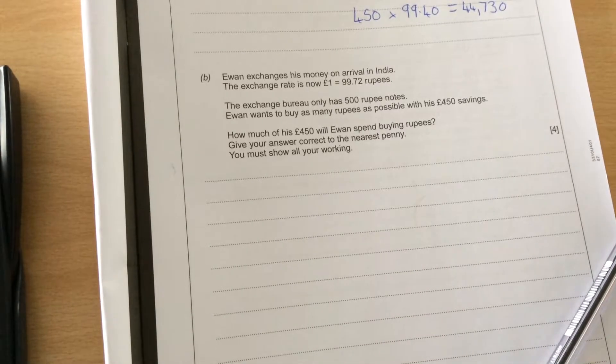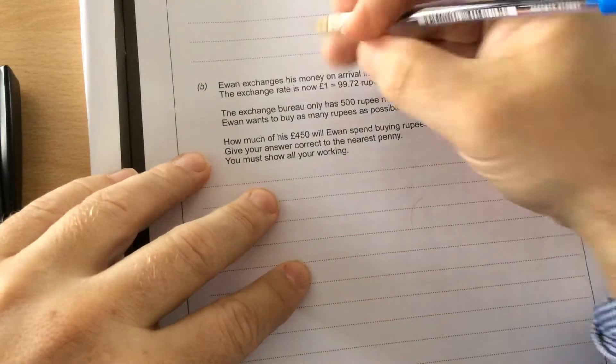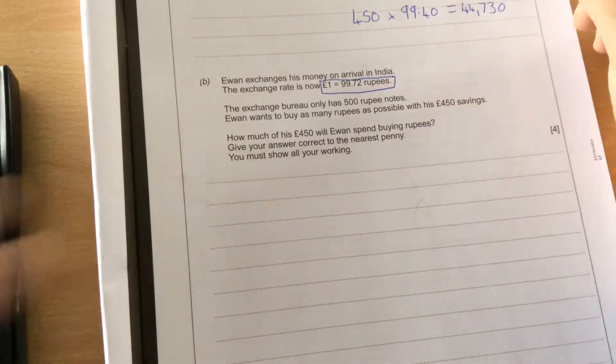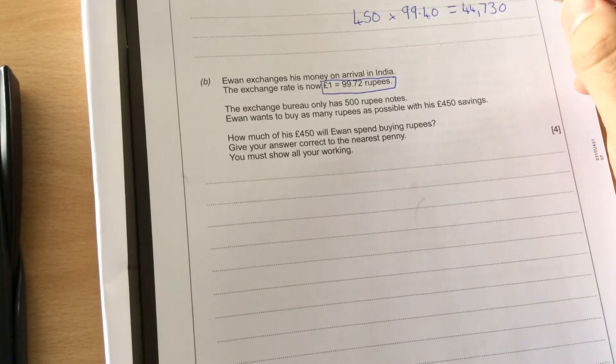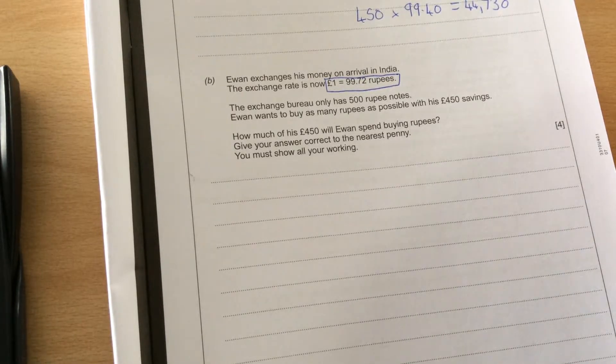Ewan exchanges his money on arrival in India. The exchange rate is now £1 equals 99.72 rupees. The exchange bureau has only 500 rupee notes. Ewan wants to buy as many rupees as possible with his £450 savings. So he's got up to £450 to exchange.